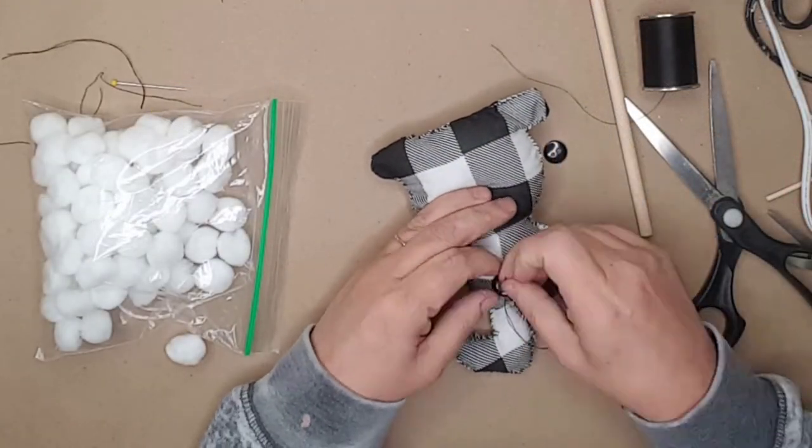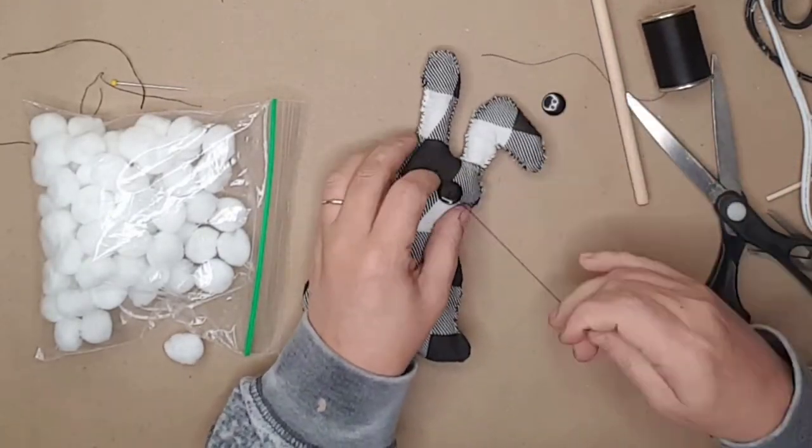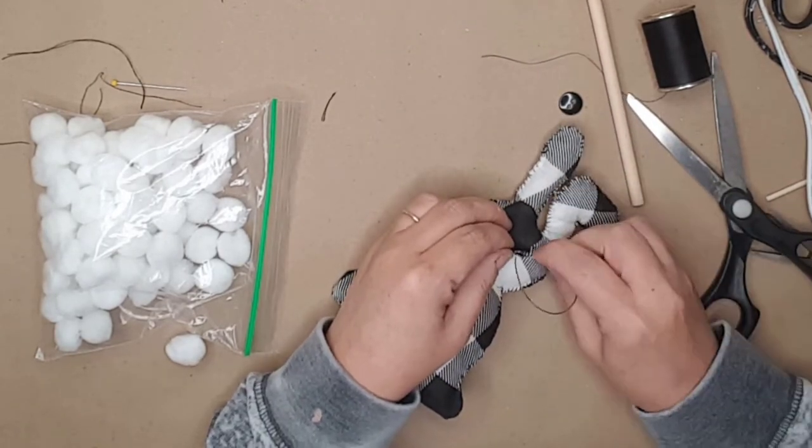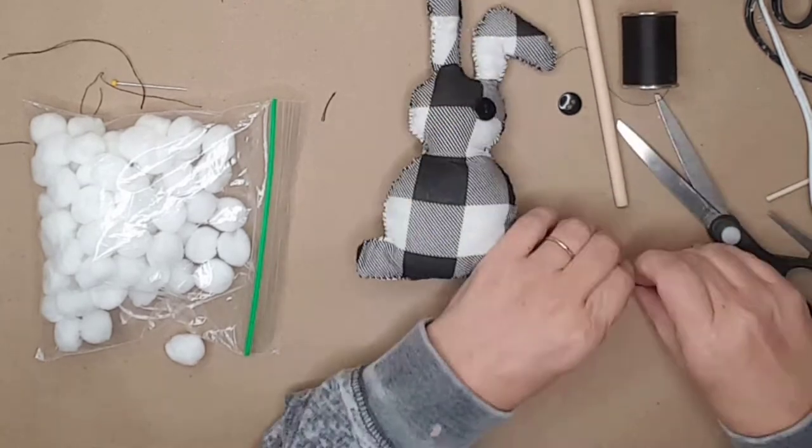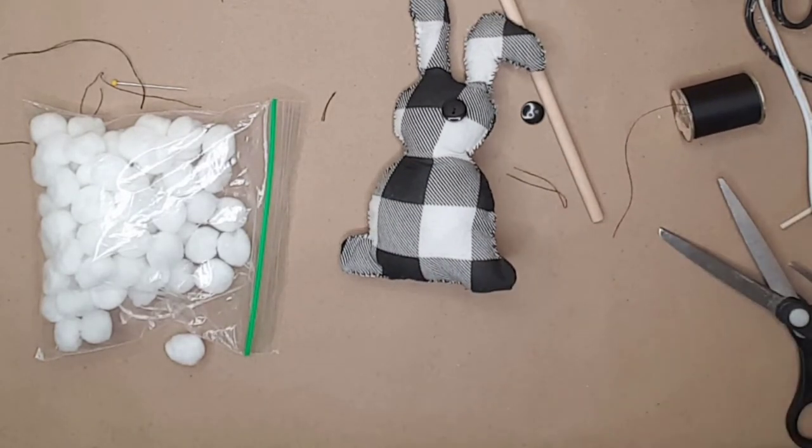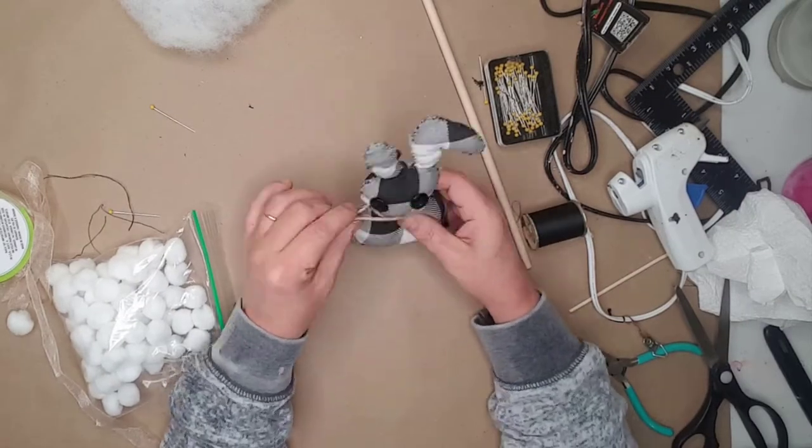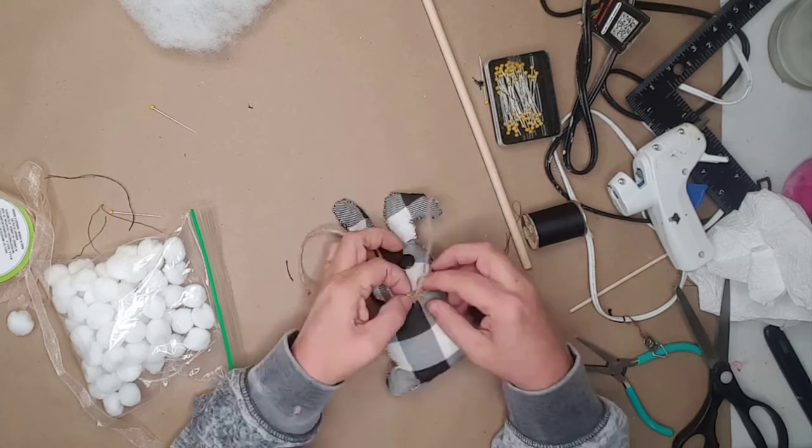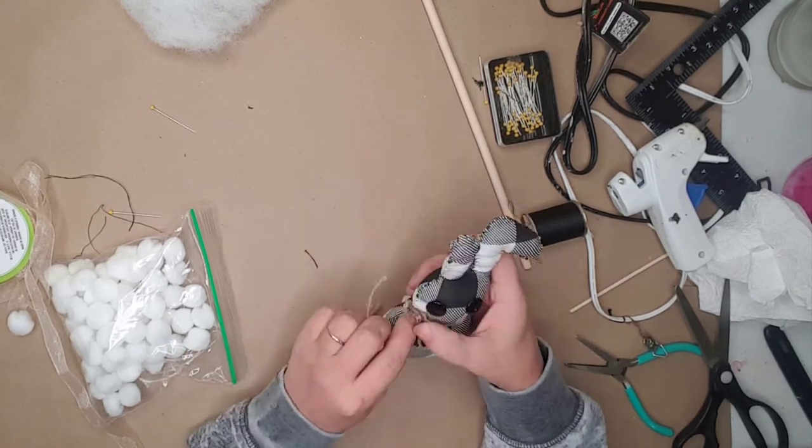I decided the bunny needed some eyes. I found these two buttons in my stash and sewed them onto the bunny, trying to make sure they were centered and even as possible. The last thing I did was add a little tail using a Dollar Tree white pom-pom and added a piece of twine around his neck.